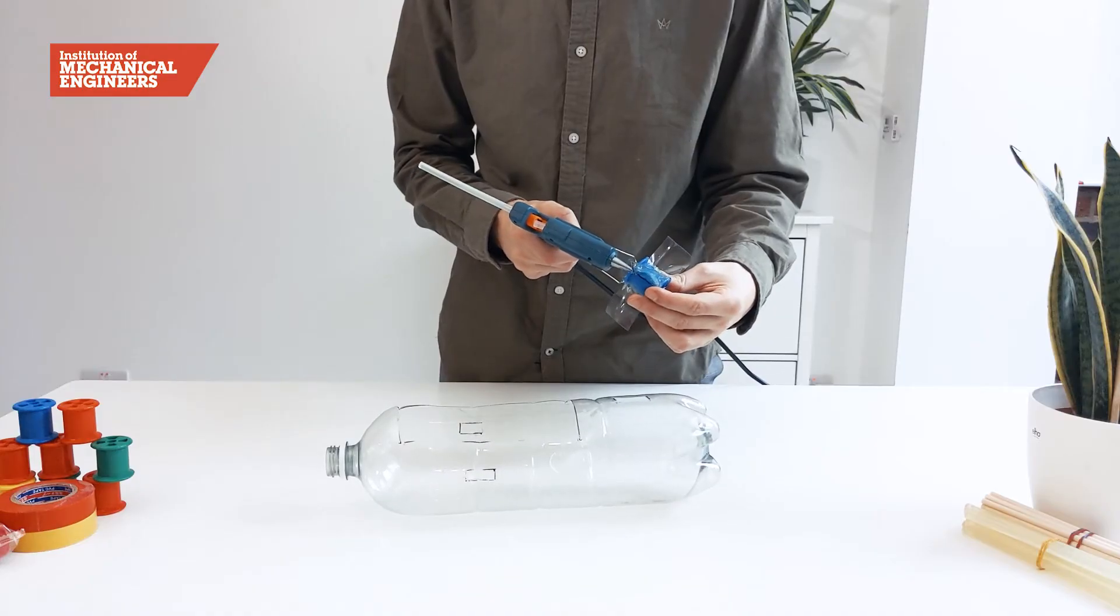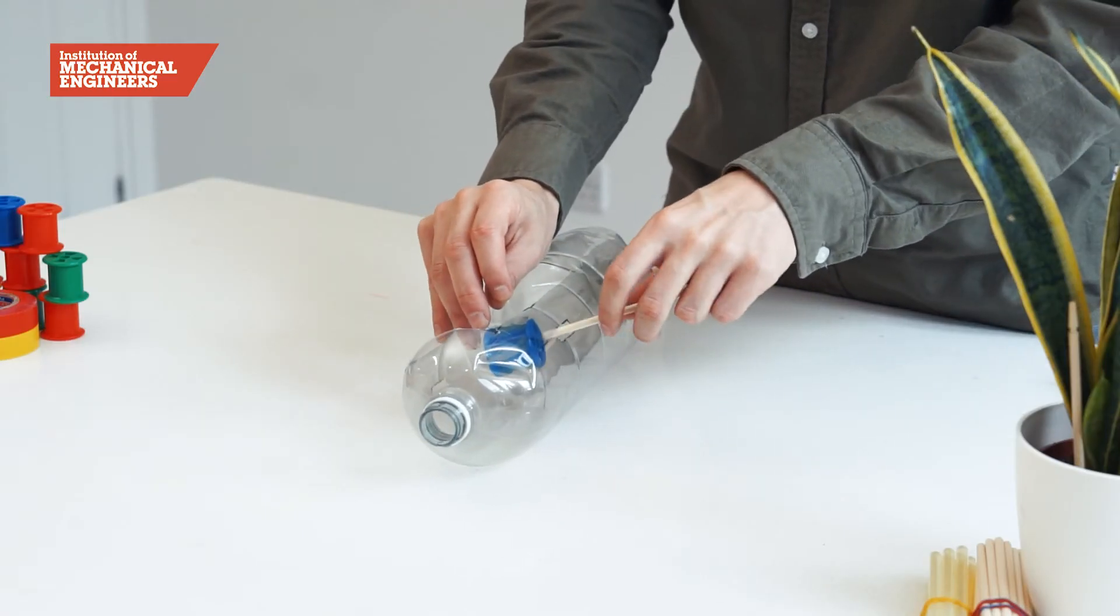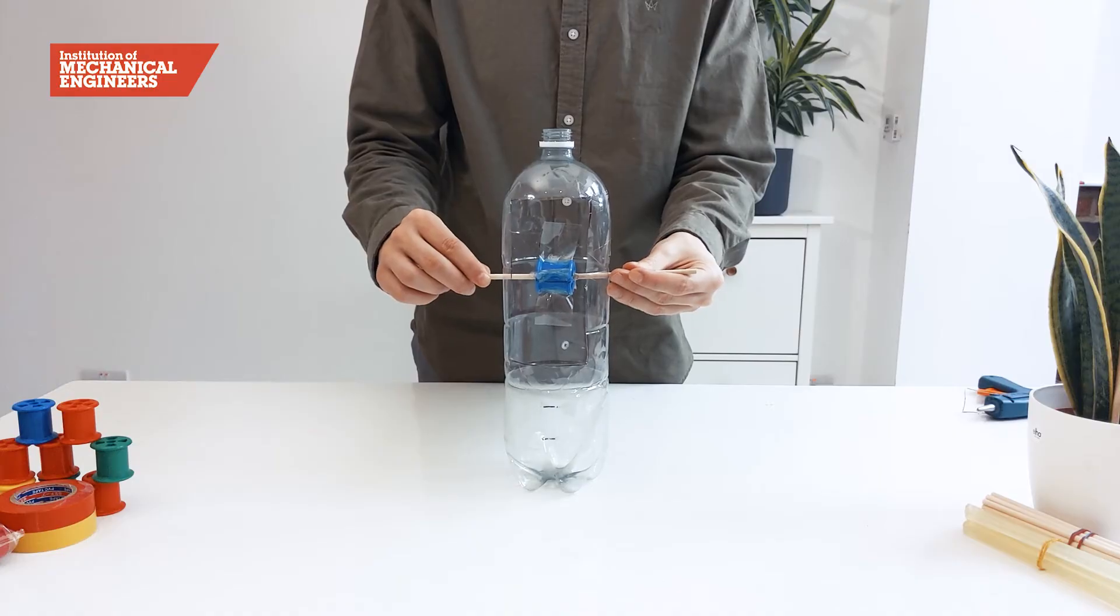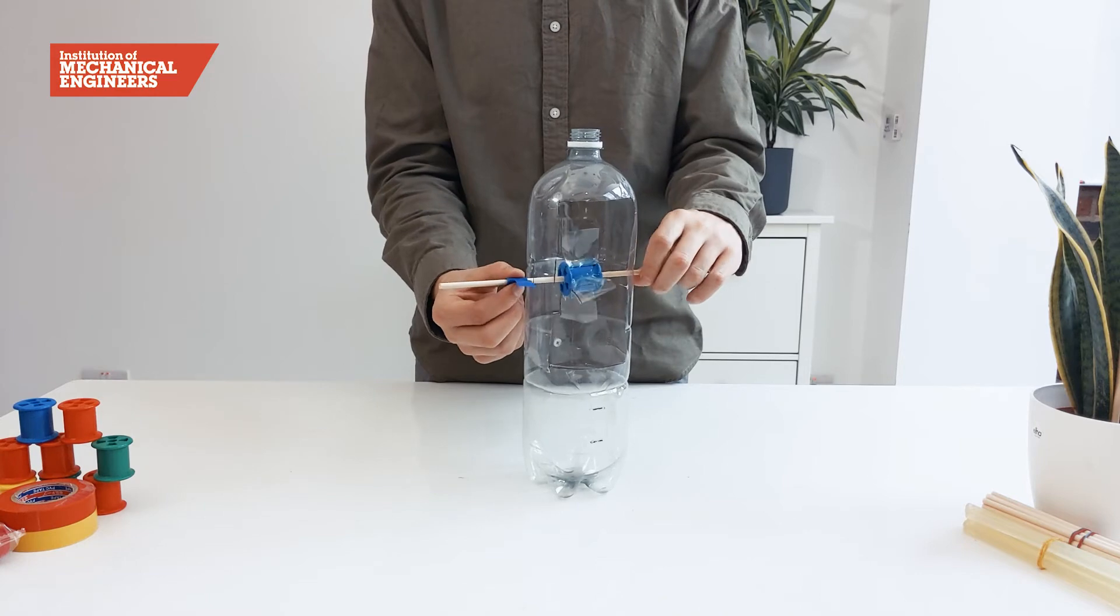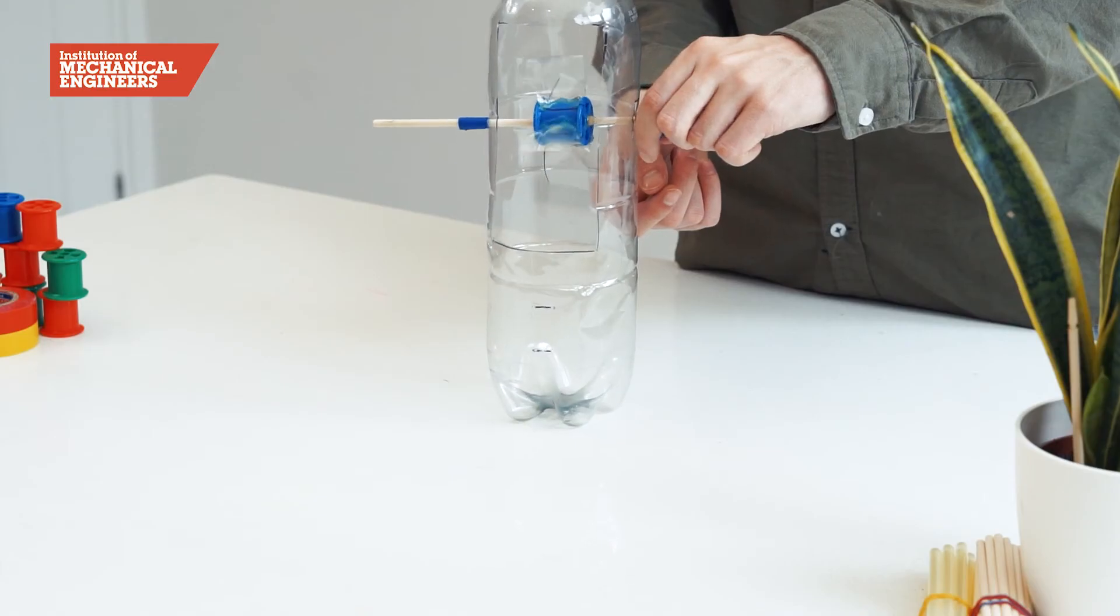Put some glue inside the cotton reel and insert a dowel through the slits in the side of the bottle and through the cotton reel. To keep the dowel in place, wrap tape around the outside of the bottle to keep it from moving sideways.